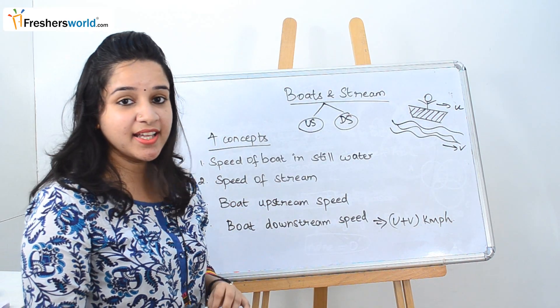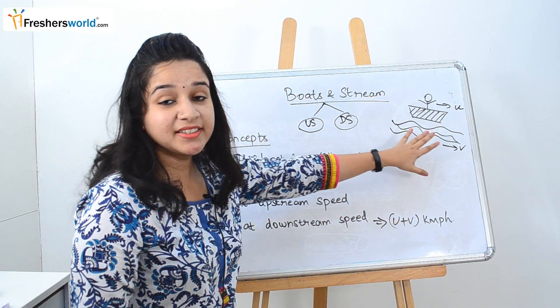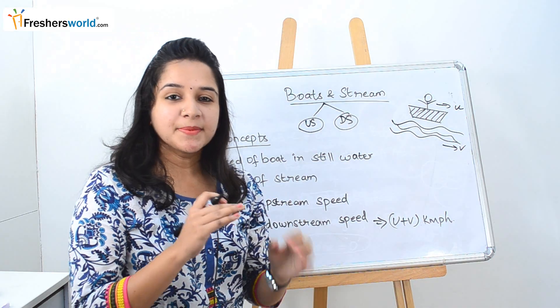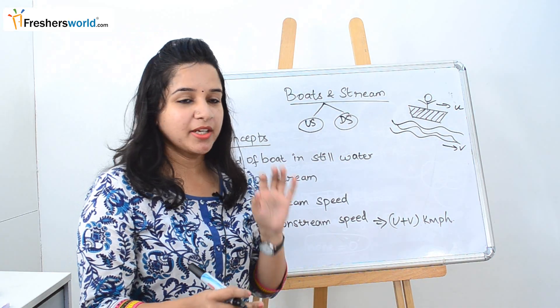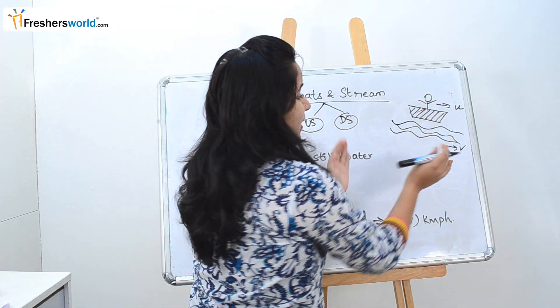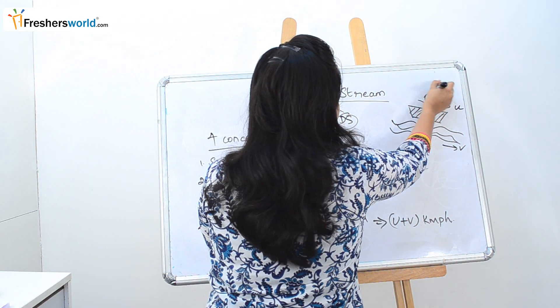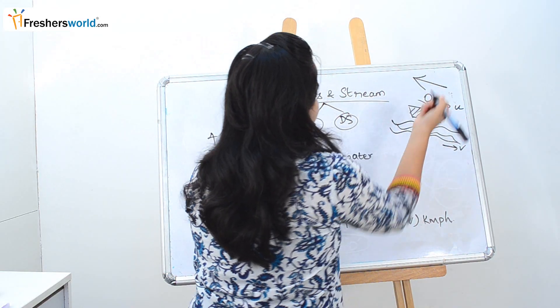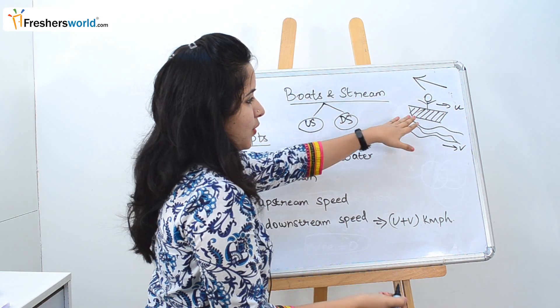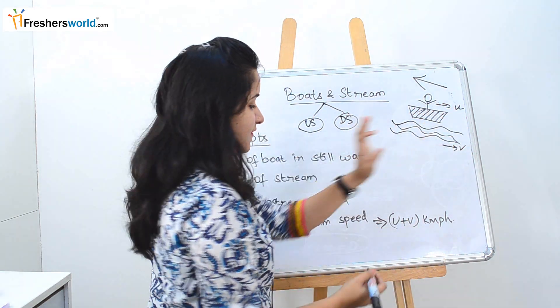Next, for boat upstream speed: upstream is nothing but your boat is not going in the direction of the stream — it is going in the opposite direction. So it will be U minus V.